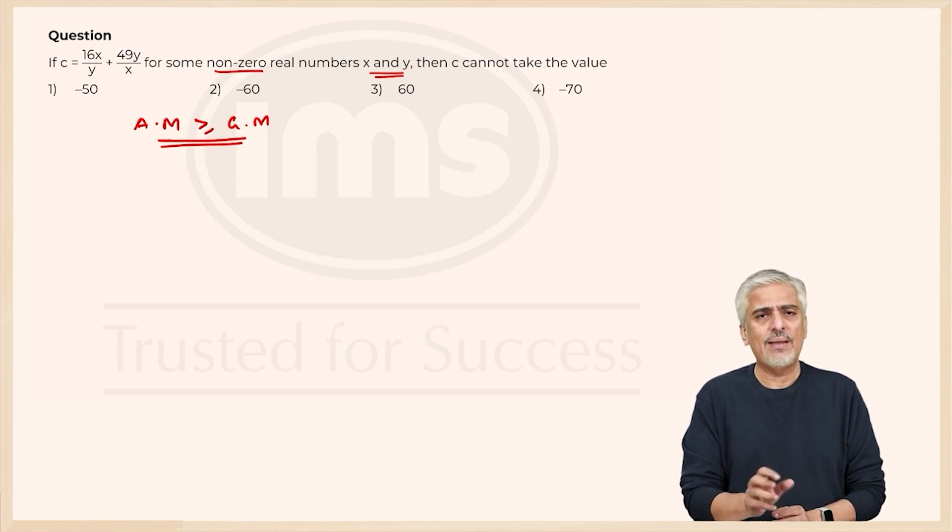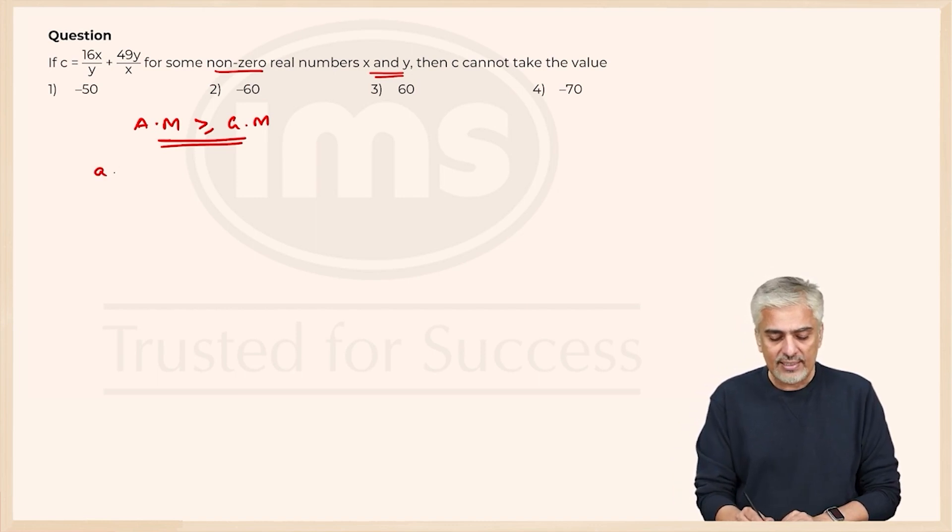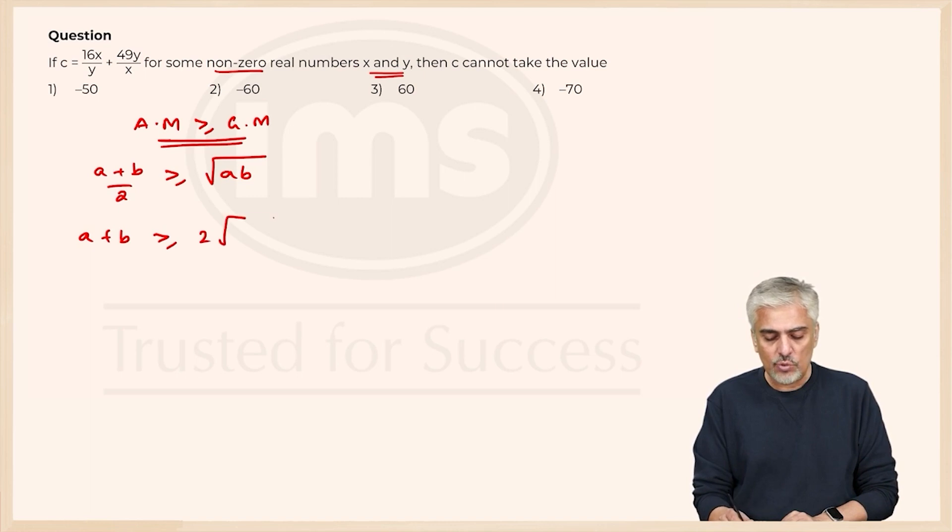So arithmetic mean is nothing but a plus b upon 2, which has to be greater than or equal to the geometric mean which is square root of ab. Take two on top, so I have a plus b has to be greater than or equal to 2 root ab.